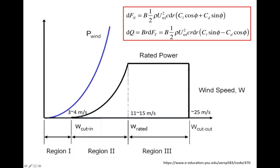If you purchase a wind turbine, the manufacturer will also provide you with such a curve, but it will differ from the one computed using BEM theory. The blue curve here is the power in the wind, which is proportional to the cube of the free stream wind speed. The black curve, which lies underneath the blue curve, is the wind turbine's power curve provided by the manufacturer.